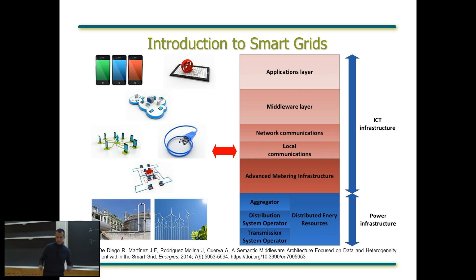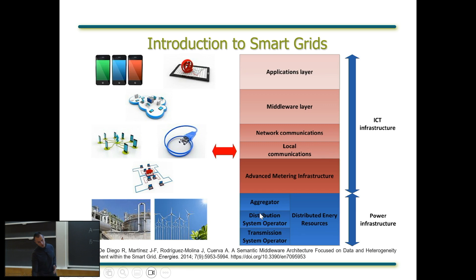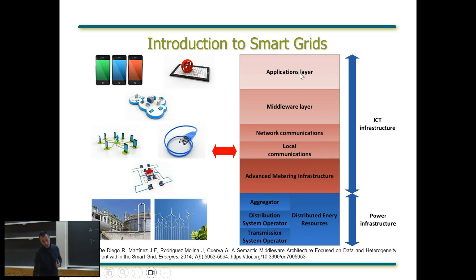From my point of view, smart grids are really disruptive in terms of energy generation, distribution, and consumption. They imply using renewable energy sources at a very small scale and having bi-directional communications — no longer just a few major actors providing energy, but also many smaller prosumers producing energy in a decentralized manner. This is a very ICT-focused structure: we have a regular power infrastructure with aggregators, distribution system operators, transmission system operators, and distributed energy resources, alongside an ICT infrastructure using advanced metering infrastructure and energy-consumption applications.